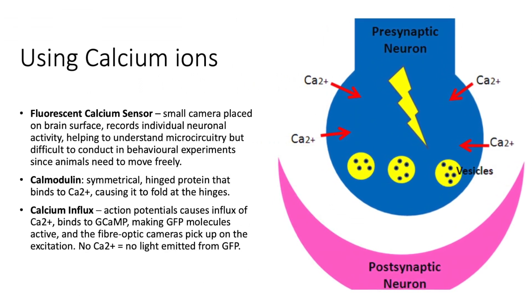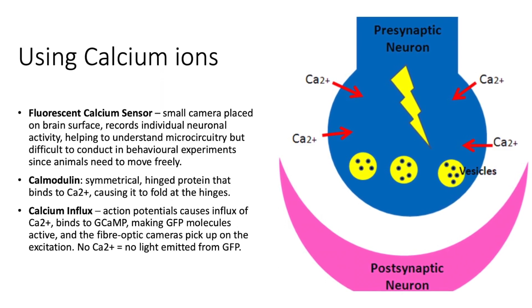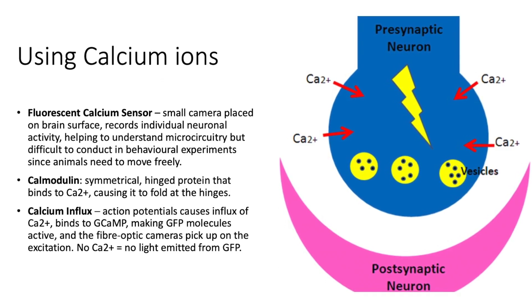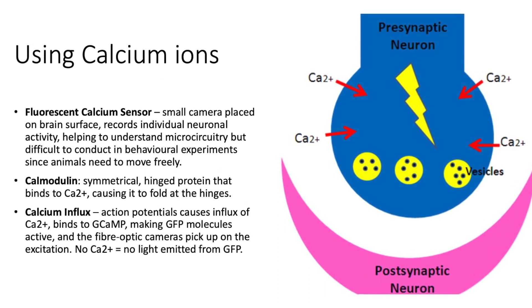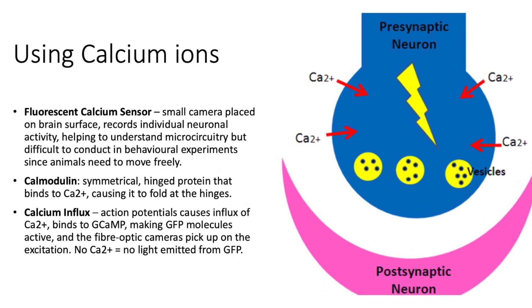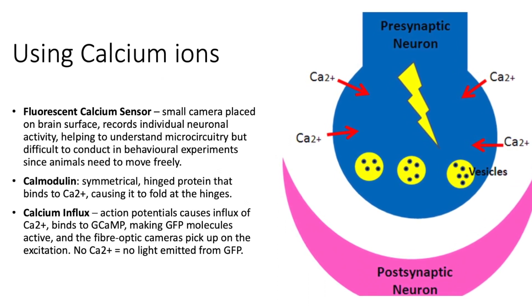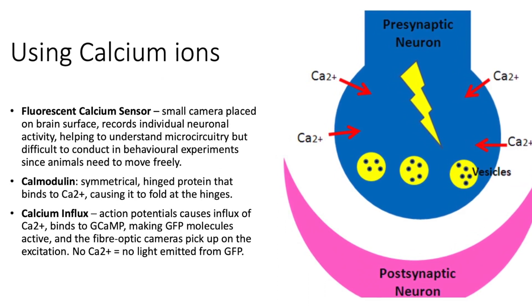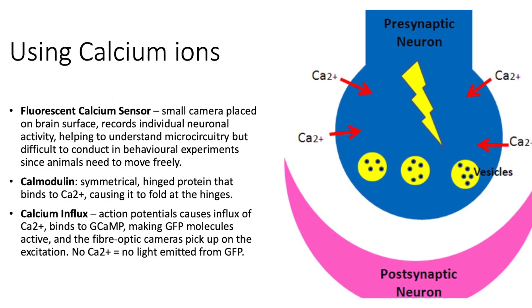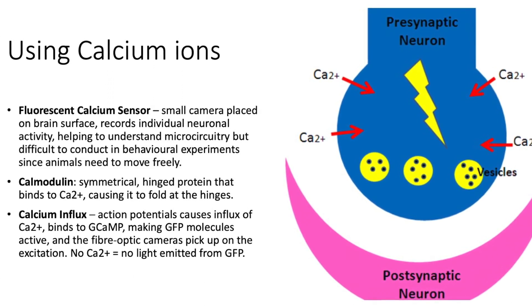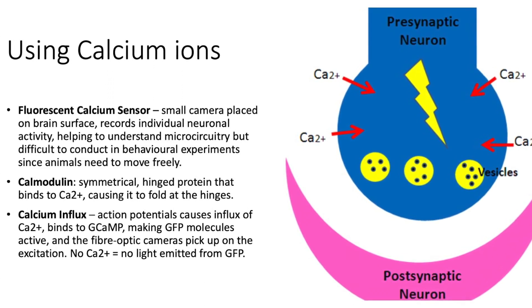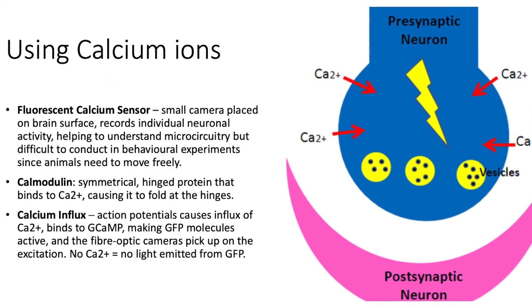Through these techniques, we can then measure the calcium influx, where action potentials cause calcium ions to bind to GCaMP, making the green fluorescent protein molecules active, and the fiber optic cameras can pick up the excitation. If there are no calcium ions, then no light is emitted from the green fluorescent protein; and if there are, then it is emitted.